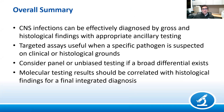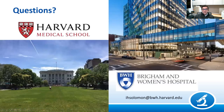The overall summary for this talk is that CNS infections can be effectively diagnosed by gross and histologic findings with appropriate ancillary testing. Targeted assays can be useful when a specific pathogen is suspected on clinical or histologic grounds. Consider panel or unbiased testing if a broad differential exists. Critically, molecular testing results should be correlated with histologic findings for a final integrated diagnosis, just as we do for brain tumors.